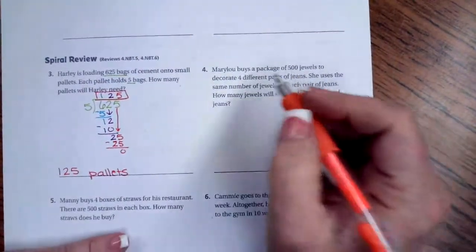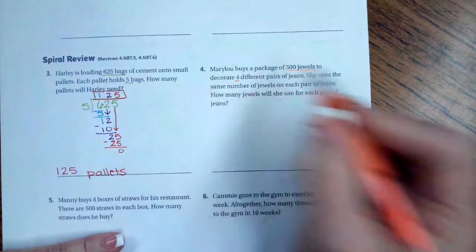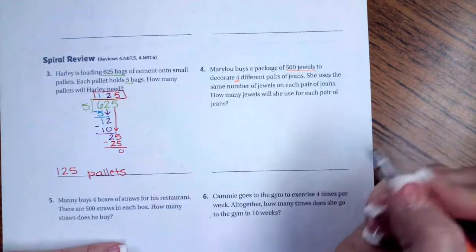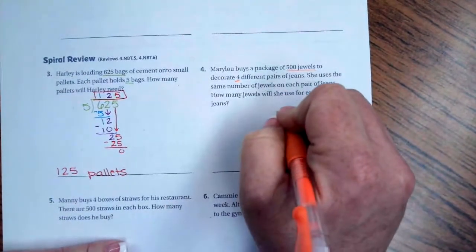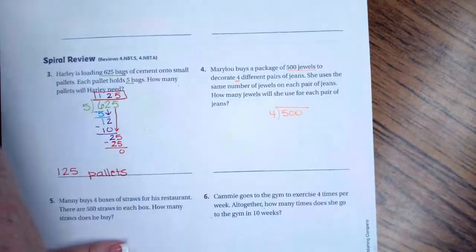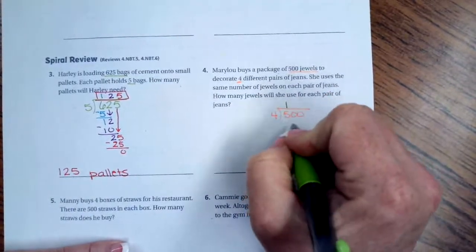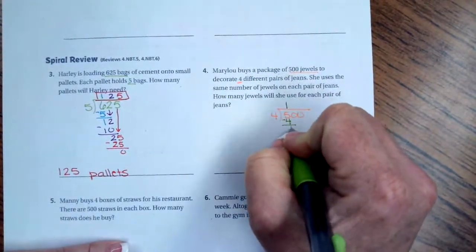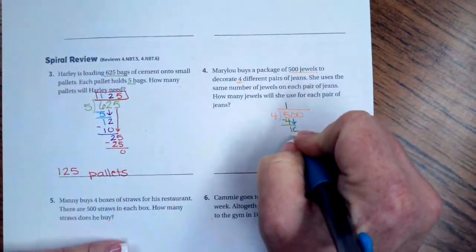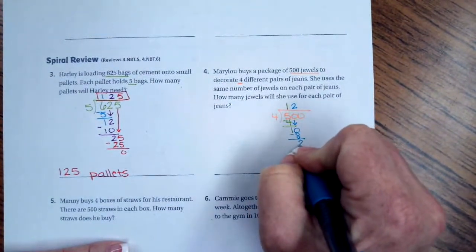Number four. Mary Lou buys a package of 500 jewels to decorate four different pairs of jeans. She uses the same number of jewels on each pair of jeans. How many jewels will she use for each pair of jeans? So we're going to say 500 and we're going to divide that by four. Four goes into five one time. 1 × 4 = 4. I subtract, I get one left over. I'm going to bring down my first zero. Four goes into ten two times. 2 × 4 = 8. I subtract, I get two. I'm going to bring down my very last zero.